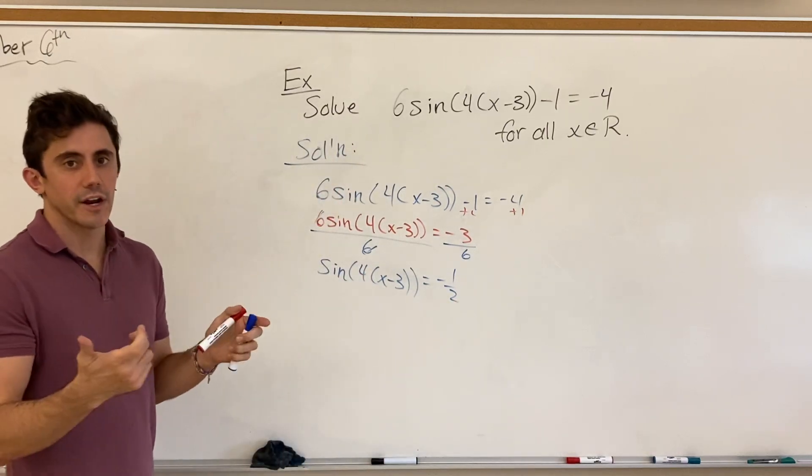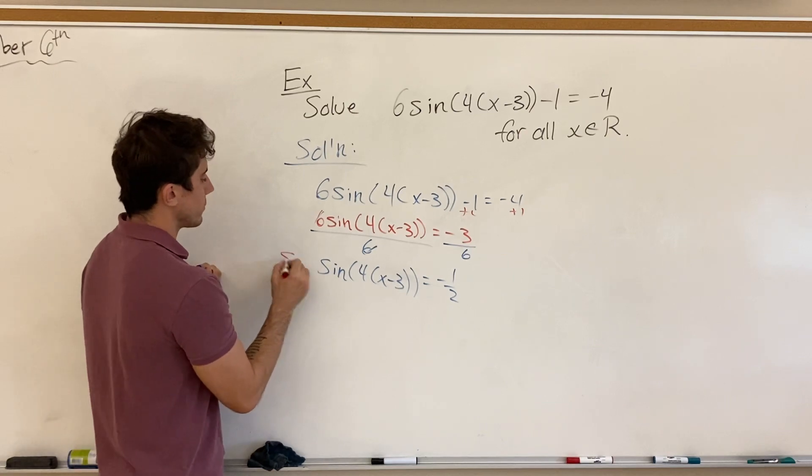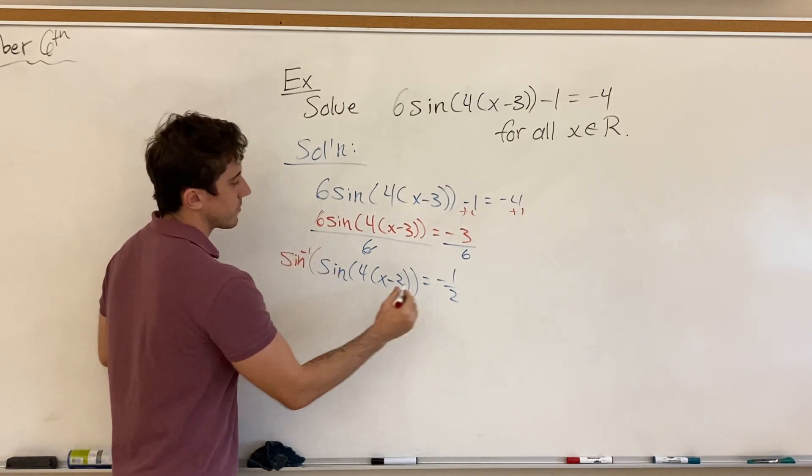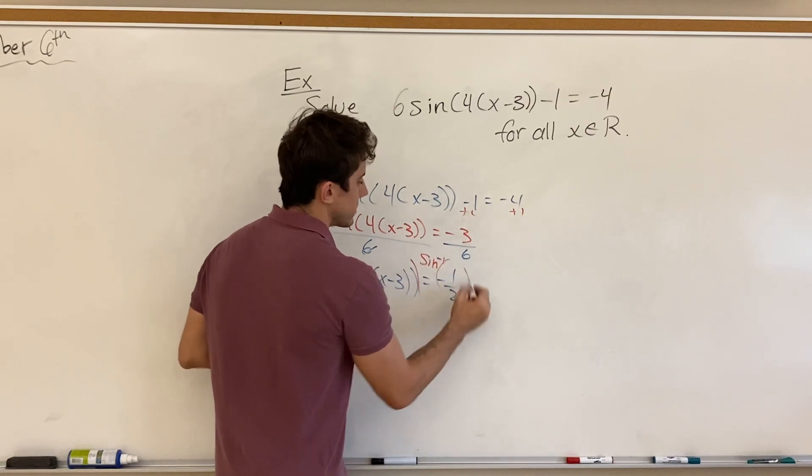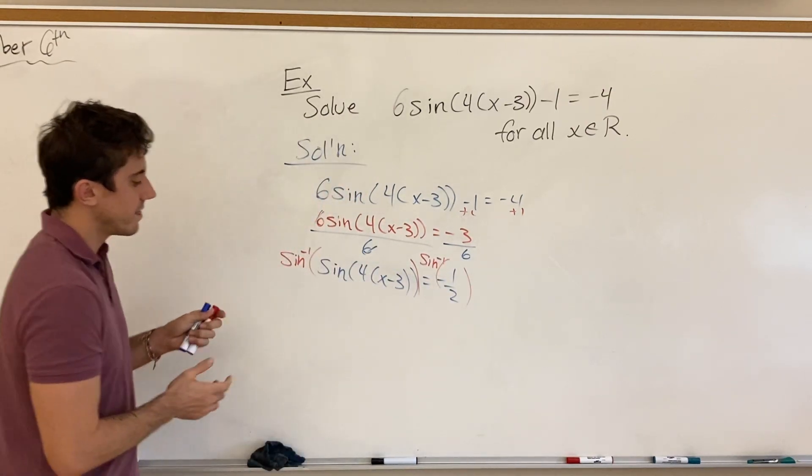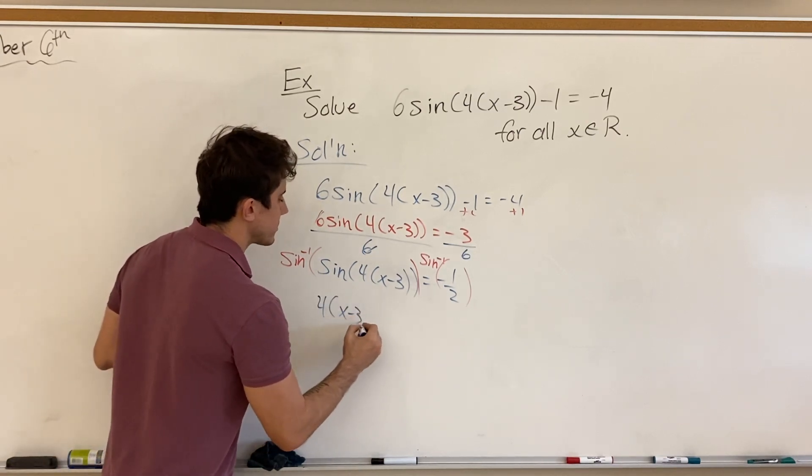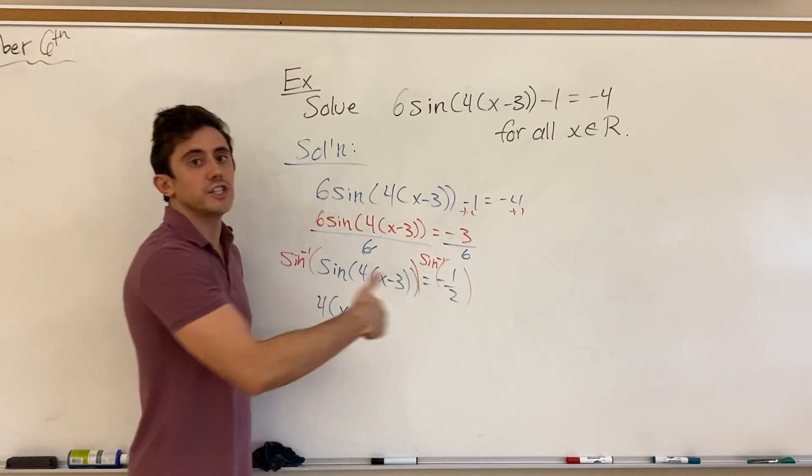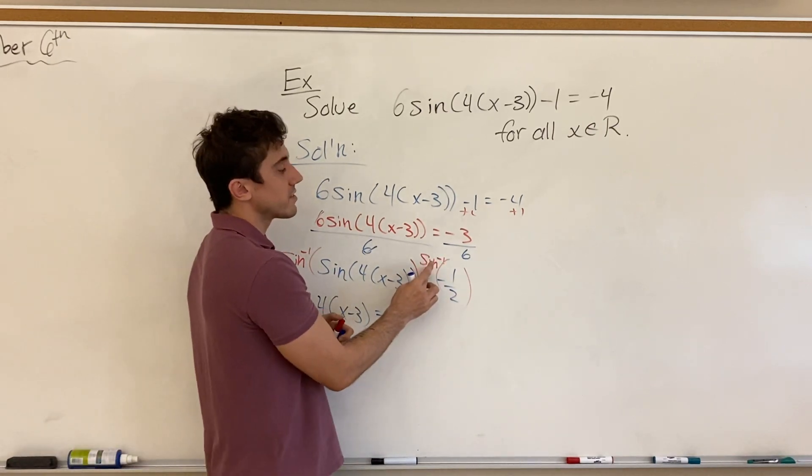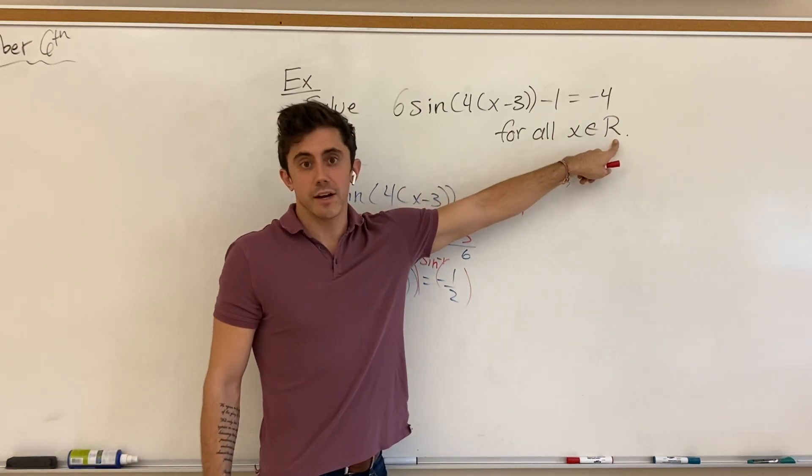And it's at this step that we want to be careful in our solution, because at this step we're going to take the inverse sine of both sides. We're going to take the inverse sine to cancel out the regular sine, and we're going to take the inverse sine of the right side as well. And so it's at this step that we see 4 bracket x minus 3 be equal to. This is where we need to consider all the general solutions for the inverse sine of negative 1 half, because this is where this domain comes into play.